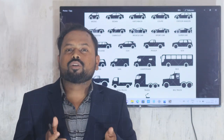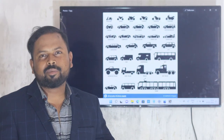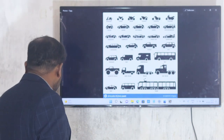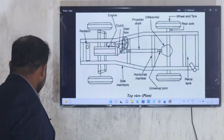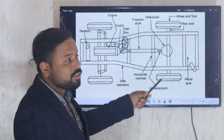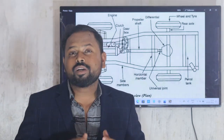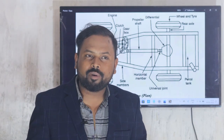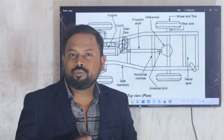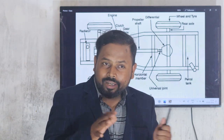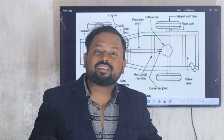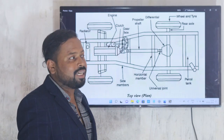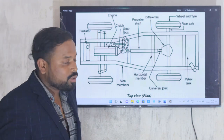Now we are going to discuss the chassis of an automobile. Here is the schematic diagram of the chassis. Chassis is the main frame or skeleton of the automobile where all the major components are mounted. If you remove all the body covers of the vehicle, the main skeleton that contains the engine and various major components — that main frame is known as the chassis.